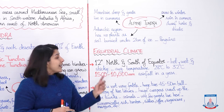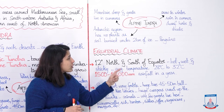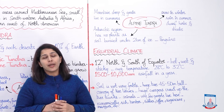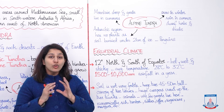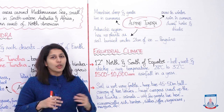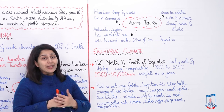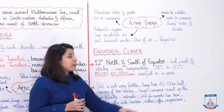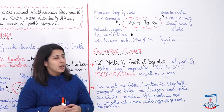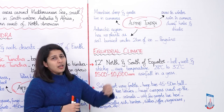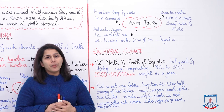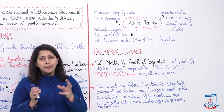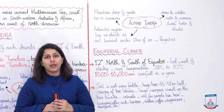Equatorial climate mein garmi hai, habs hai, aur baarish hai. Average temperature is 28 to 32 degrees Celsius throughout the year — 28 se kam nahi hota aur 32 se zyada nahi hota. The rainfall is abundant — from 1,500 to 10,000 mm in a year. Jab is tarha ki rainfall hogi aur temperature bhi hot hoga, toh aap kya expect karenge? Interestingly, the soil is not very fertile.